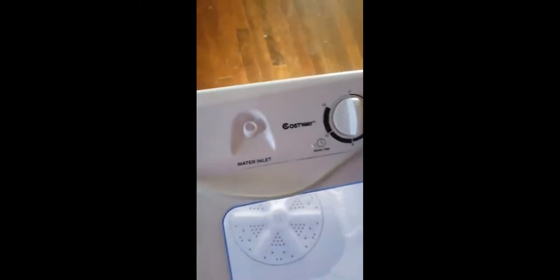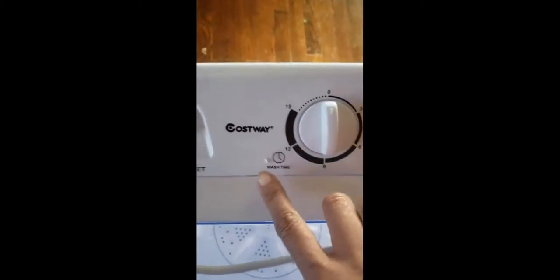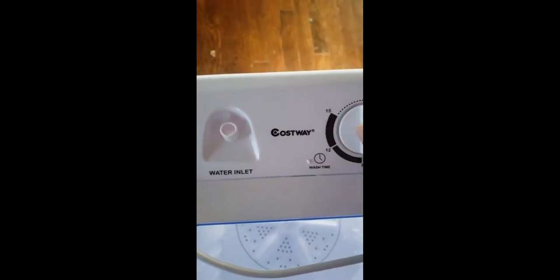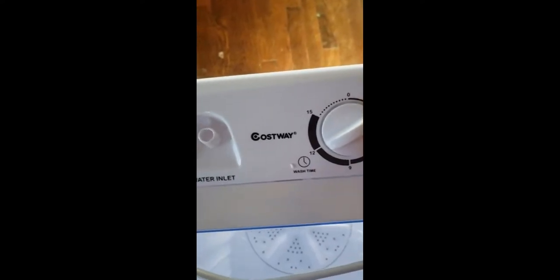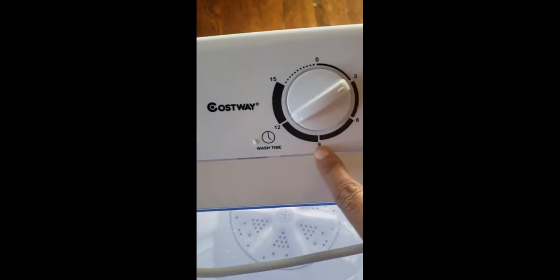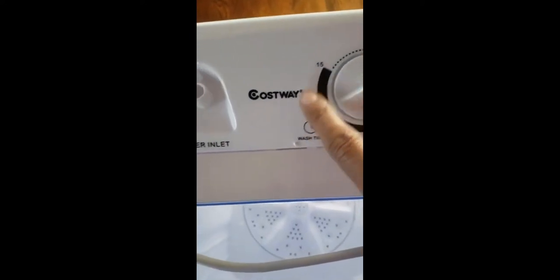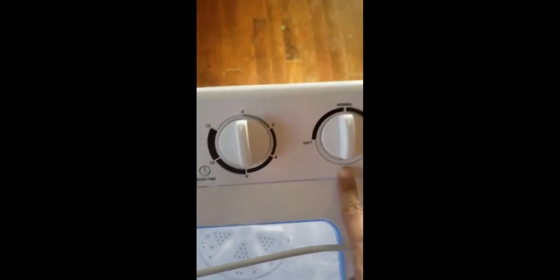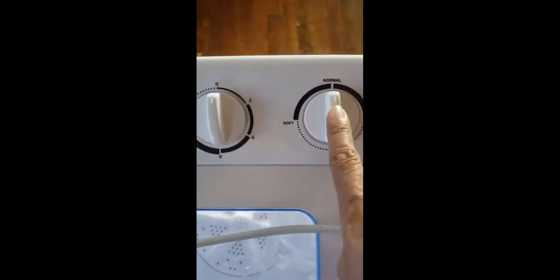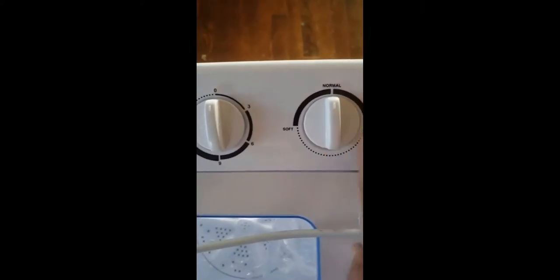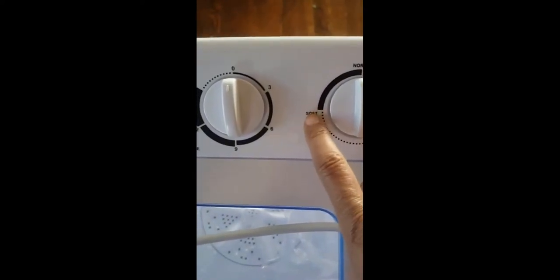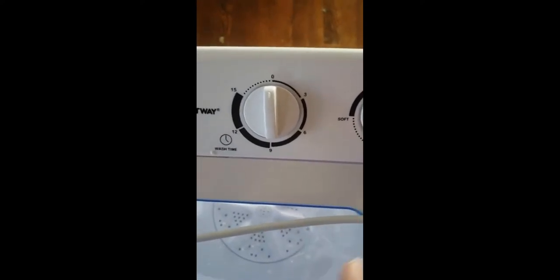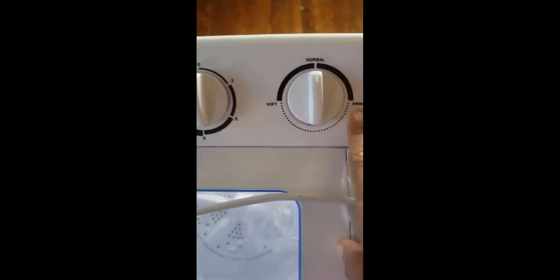Right here you have the wash time and the timing. You can wash something for three minutes, six minutes, nine, twelve, or fifteen minutes. In the middle you have normal if you want your things to wash on normal, you have drain, and also right here you have soft. I'm thinking that this is for soft, low agitation, and this right here is also for drain.